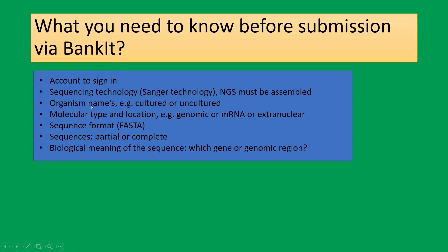Third, you need the organism name — it is important to know where, when, and how you obtained the organism, what type of organism was used, and whether it was cultured or uncultured. Fourth, you need the molecular type and location — whether your sequences represent genomic regions, mRNA, or extranuclear regions. Fifth, you need your sequences in FASTA format, as BankIt only accepts sequences in FASTA format. You also need to know whether your sequences are partial or complete, and finally the biological meaning — what gene your sequence represents, whether it is an intron or exon.